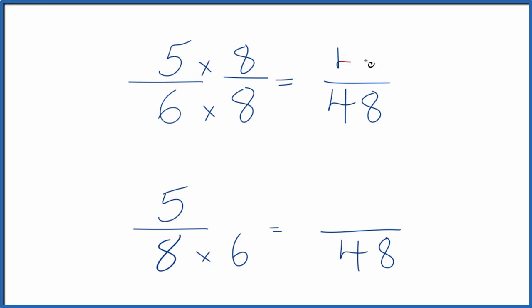5 times 8 is 40. And 40 over 48 is an equivalent fraction to 5/6. They have the same value. Down here, let's multiply times 6, so we have 1 again. 5 times 6 is 30.